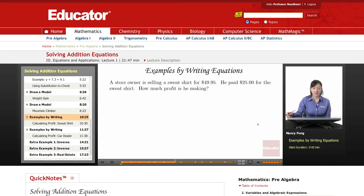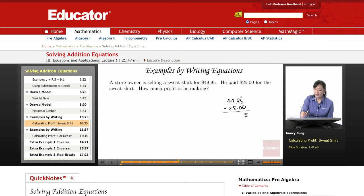Let's try some examples by writing equations without drawing the model. A store owner is selling a sweatshirt for $49.95. He paid $25 for the sweatshirt. How much profit is he making? So when you go into the store, you see the sweatshirt that costs $49.95. And you know that the store owner paid $25 for the sweatshirt because maybe you've seen it online somewhere else. And you want to know, how much is the store owner making? Is he getting too much money from you? Let's take $49.95, the total price that the sweatshirt costs, and let's subtract how much he had to pay for it to find out how much he'll be making.